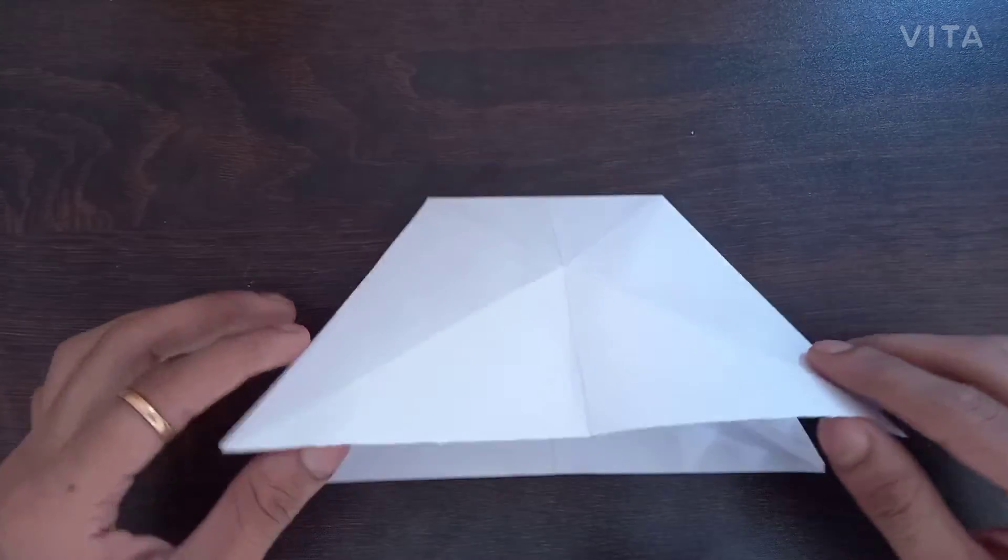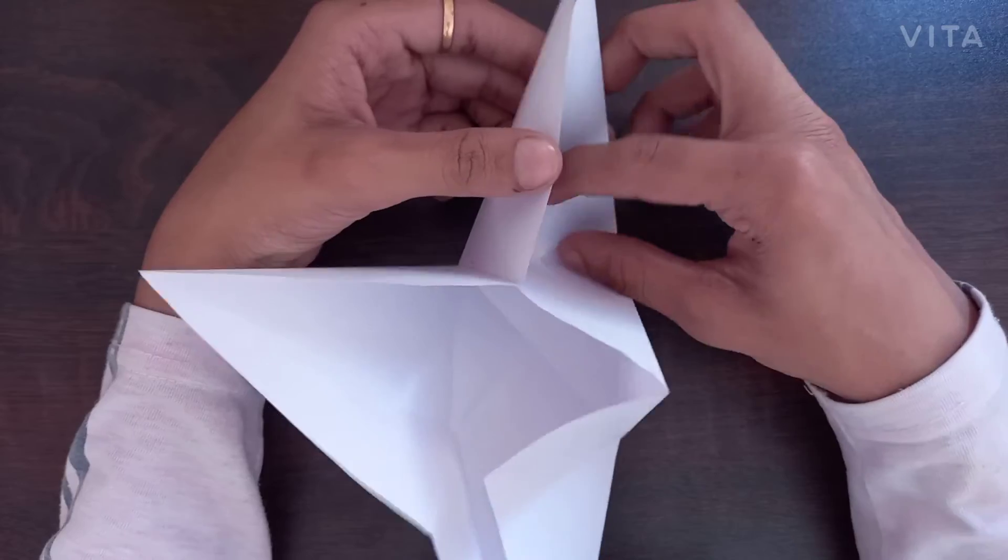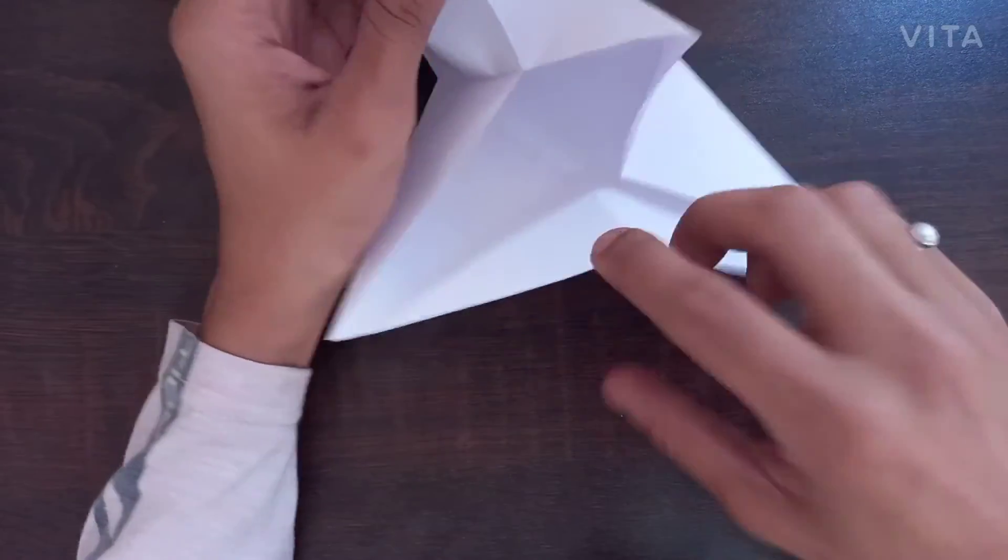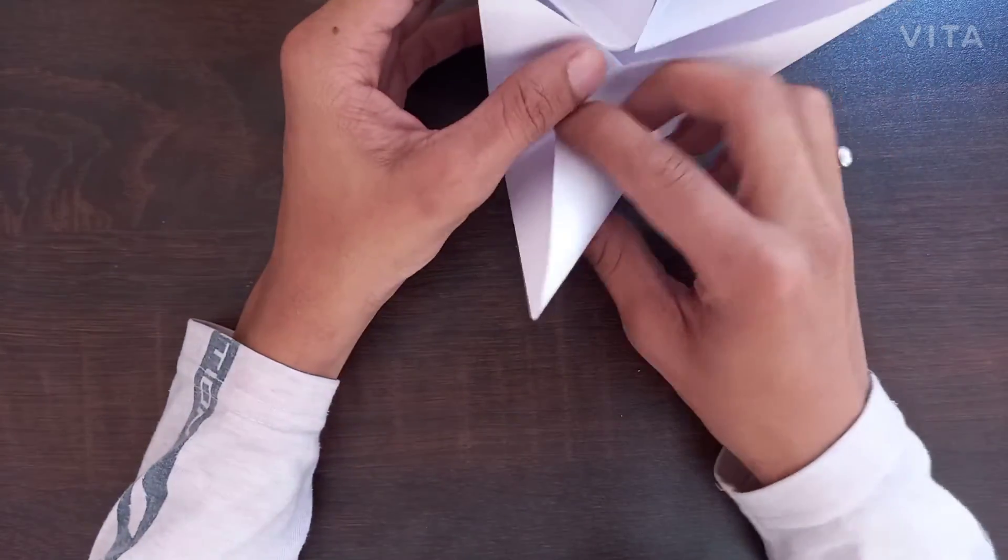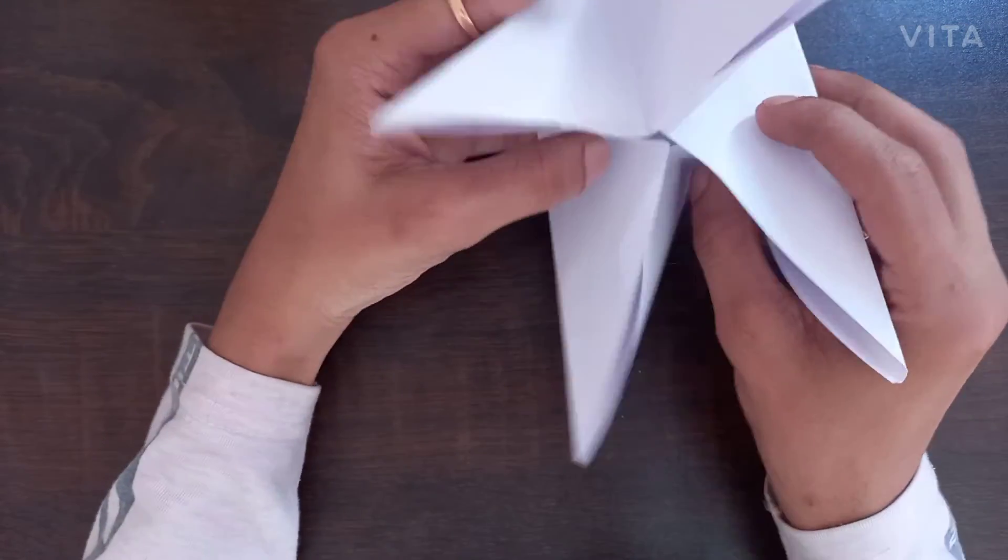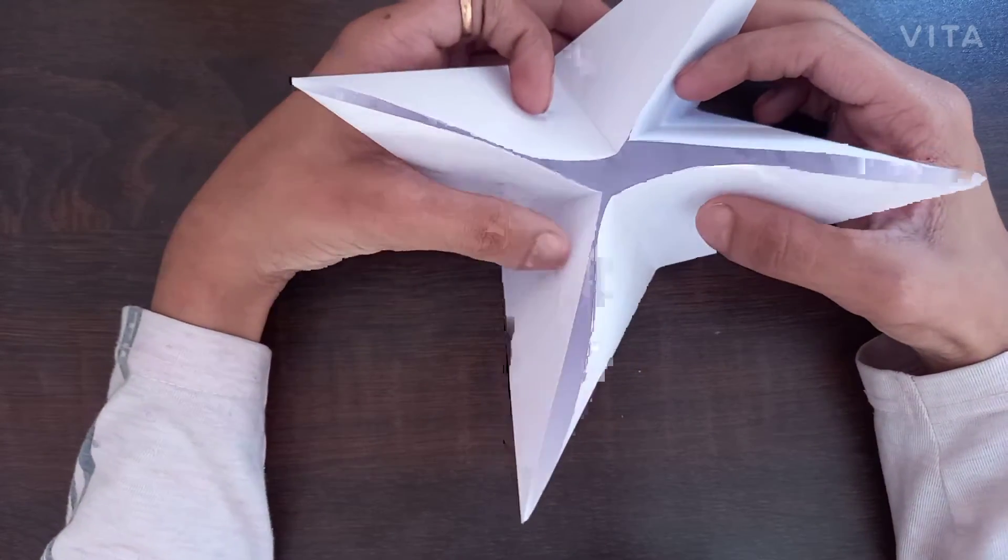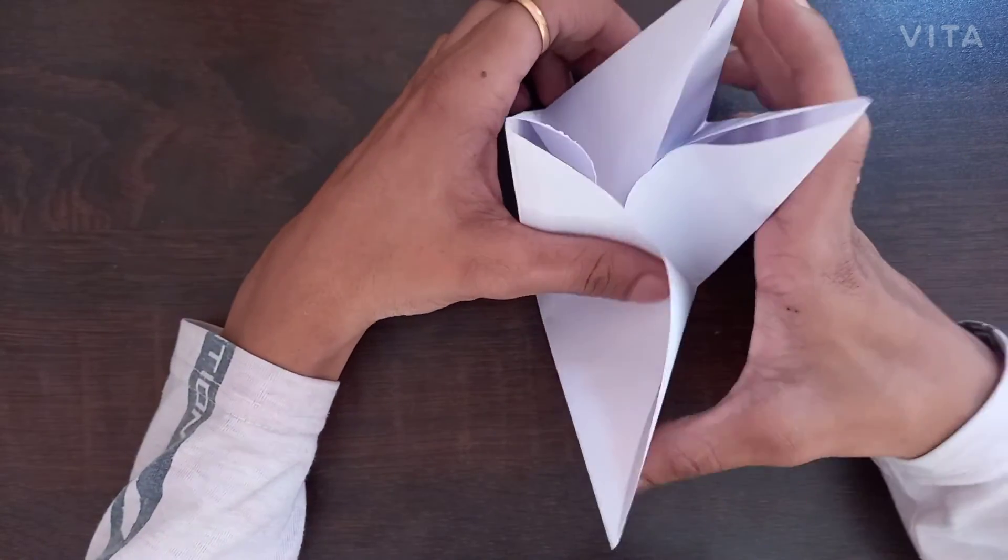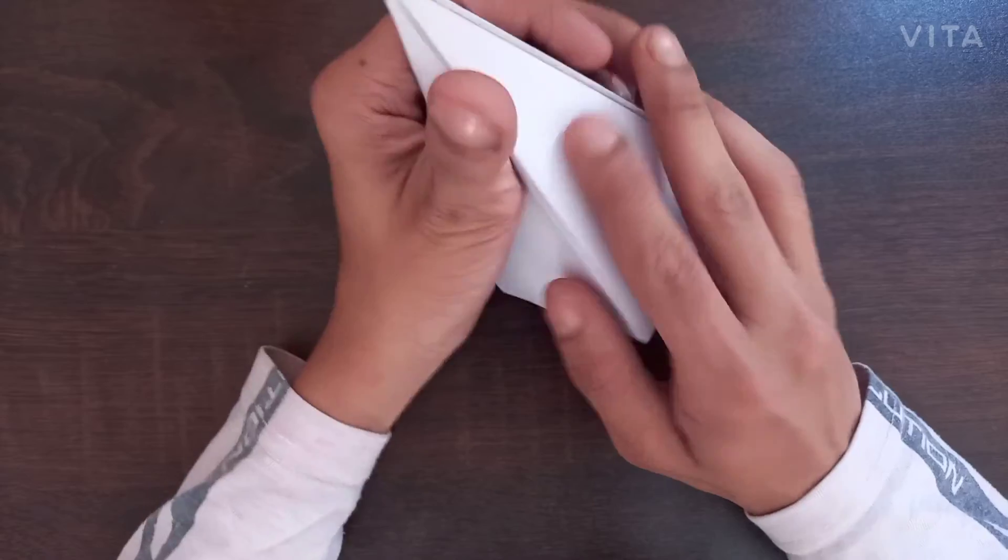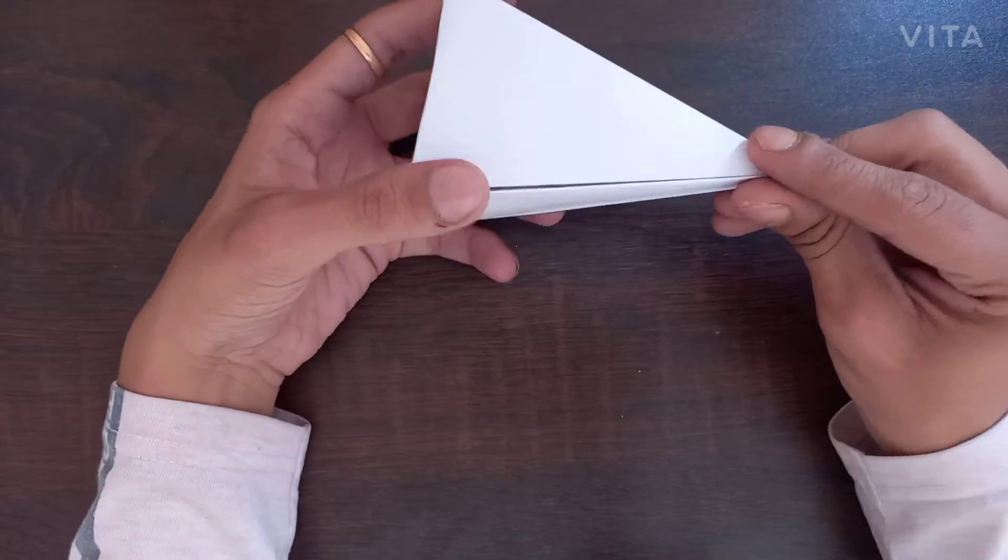And your model will look like this. Now what you have to do is just take all the edges inside here and push it inside, one against the other. Just like this. You can use your thumbs to tuck all the edges inside. Just like this. And now your model is ready.